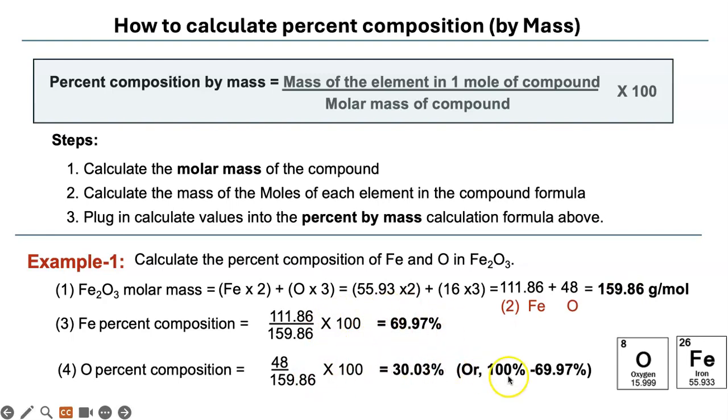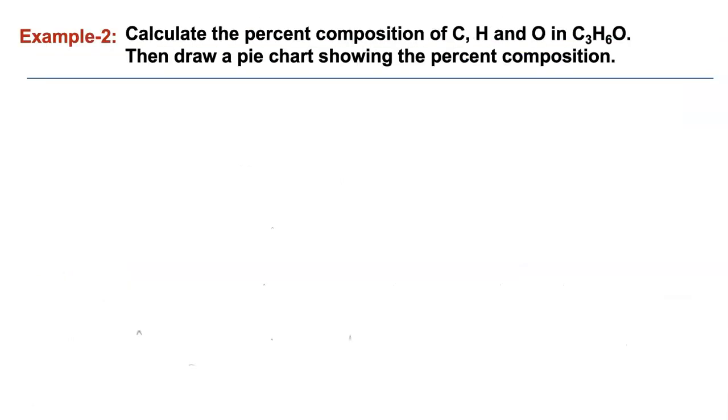Remember, since this is a percentage, both of them make up 100%. So if it's only two things, you can subtract from 100 this number to get this value, and all the percentages should add up to 100, so you can check your math that way. Let's look at another problem: calculate the percent composition of carbon, hydrogen, and oxygen in C3H6O.